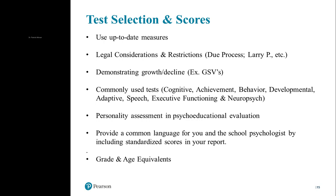We're seeing more executive functioning and neuropsychological tests being used, particularly with districts doing patterns, strengths, and weaknesses analysis, because they give more direct information about memory processing, encoding and retrieval, and executive functioning that has a direct impact on learning behaviors. We're also seeing more personality assessments being brought into psychoeducational evaluations, particularly for kids where you're trying to determine emotional disturbance as a qualifying criteria. Personality assessments give more information about what's going on inside the child's psychological experience in a way that behavioral rating scales don't quite capture — especially for more psychologically and emotionally disturbed students.